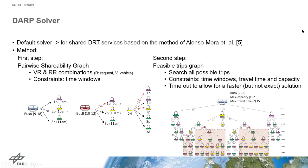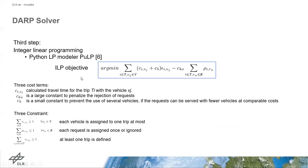The method has three steps. In the first two steps, all possible routes for every vehicle are found by doing an exhaustive search. After that, an integer linear programming problem is solved to find the optimal routes for the entire DRT service. The objective considers three different costs: the first is the travel time for the trips; the second is a large constant to penalize the rejection of requests; and the third is a small constant to prevent the use of several vehicles if the request can be served with fewer vehicles at comparable costs.